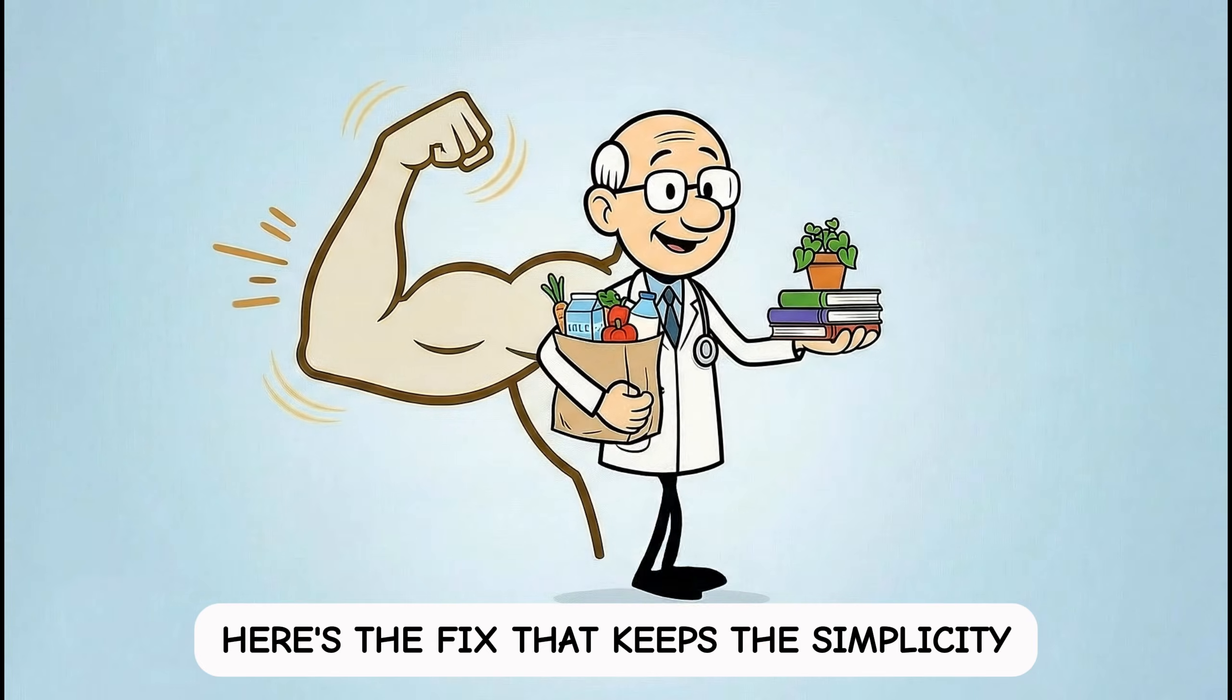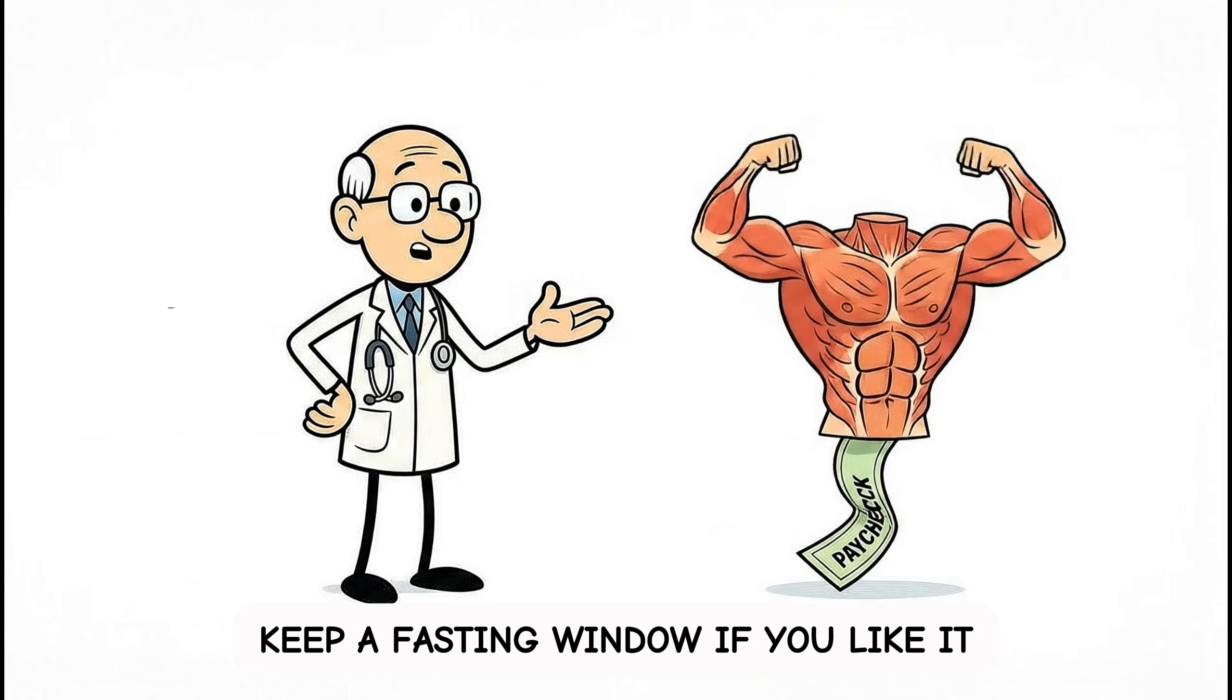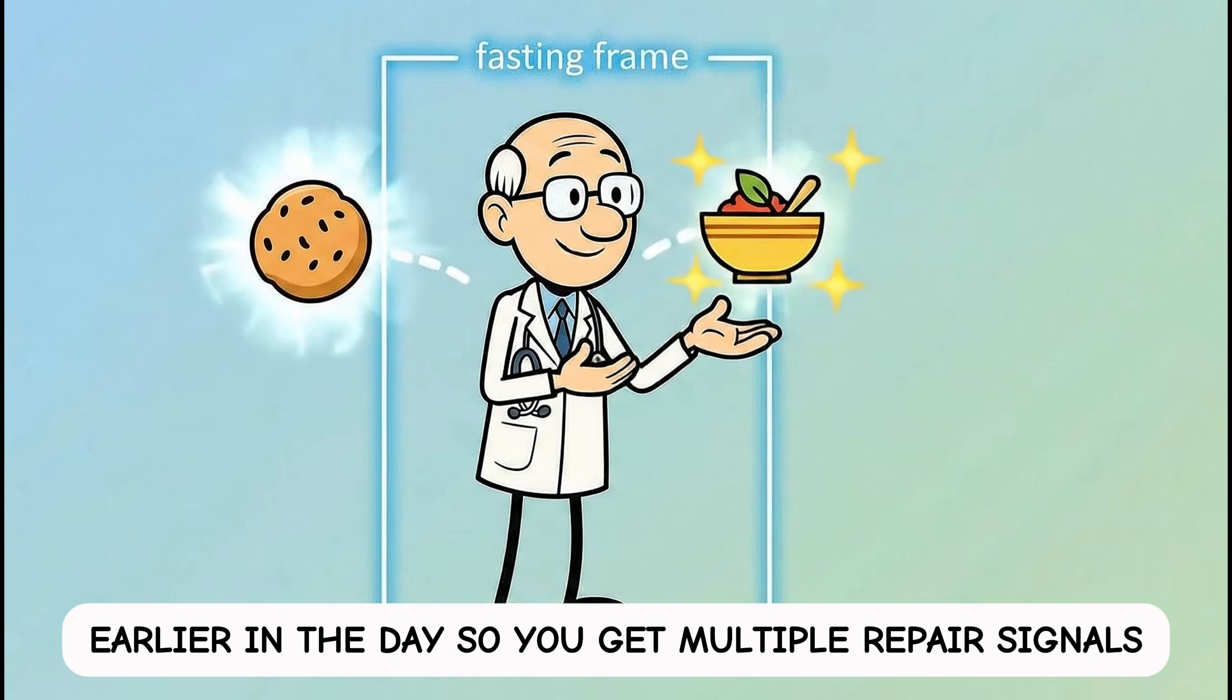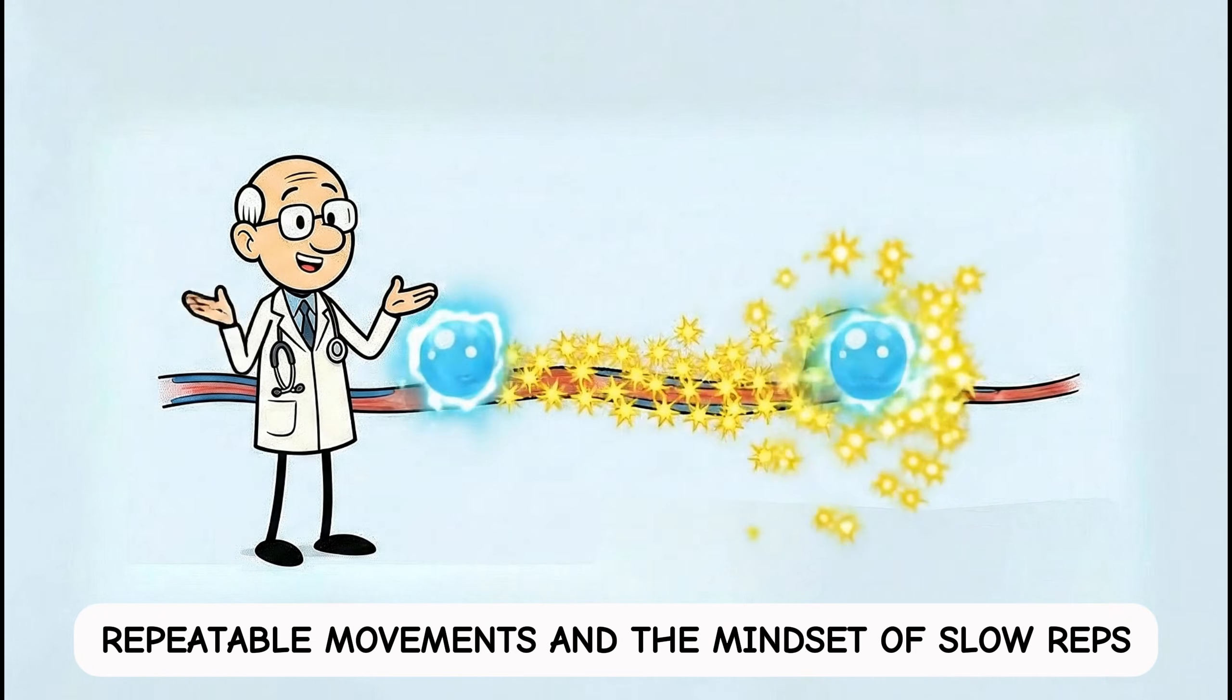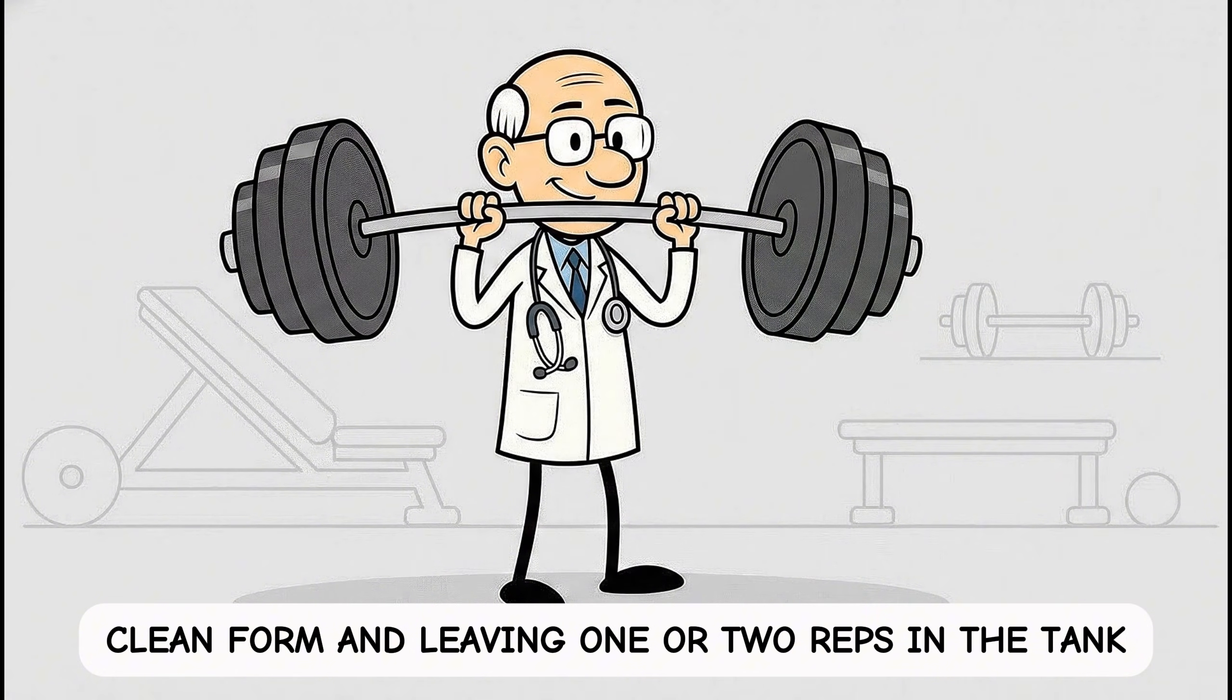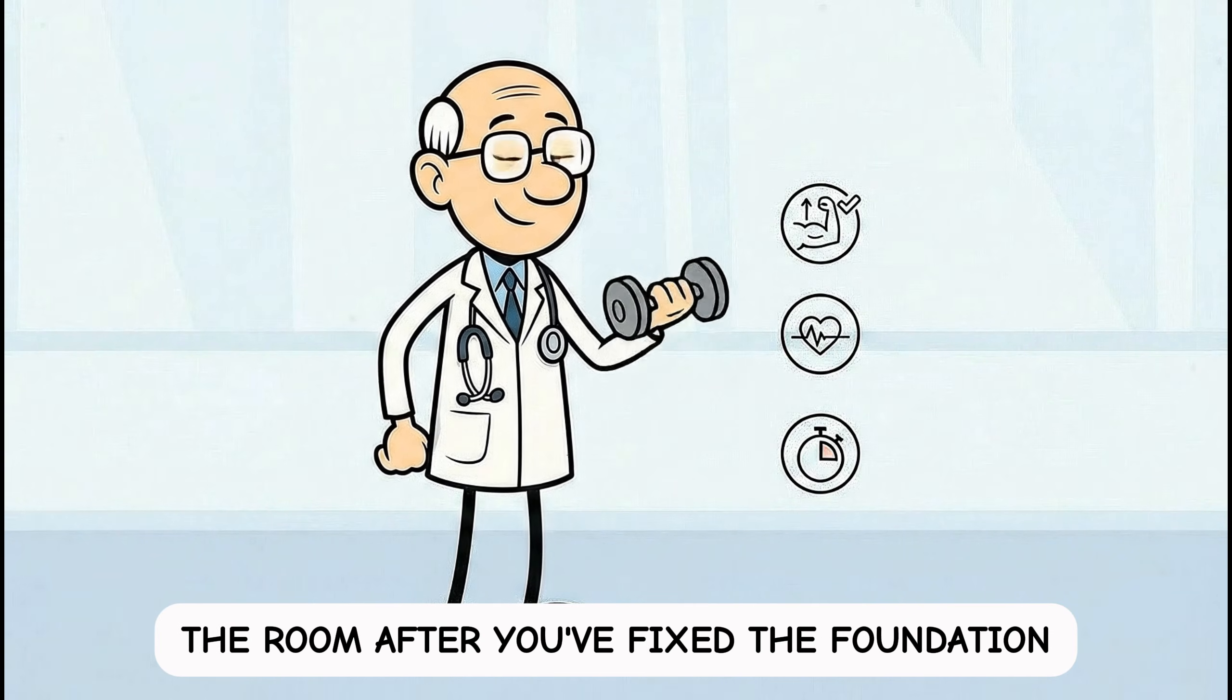Here's the fix that keeps the simplicity and drops the hidden cost. Stop running your body on one protein paycheck. Keep a fasting window if you like it, but upgrade to two meals or one meal plus a high-protein mini-meal earlier in the day so you get multiple repair signals instead of one. Lift two to three times per week with basic, repeatable movements, and the mindset of slow reps, clean form, and leaving one or two reps in the tank. Anchor each eating moment with protein first, then add carbs and fats, like you're furnishing the room after you've fixed the foundation.